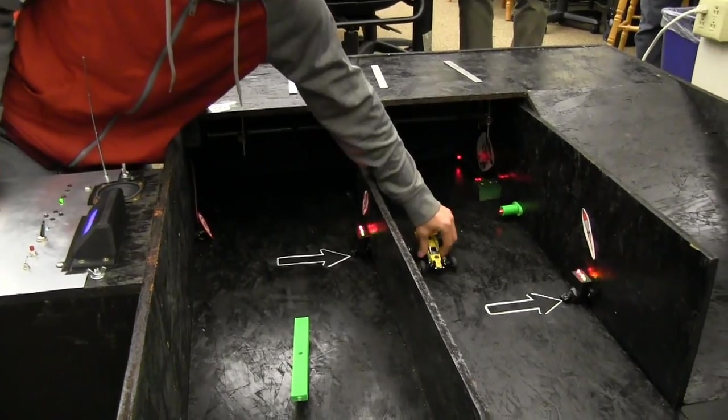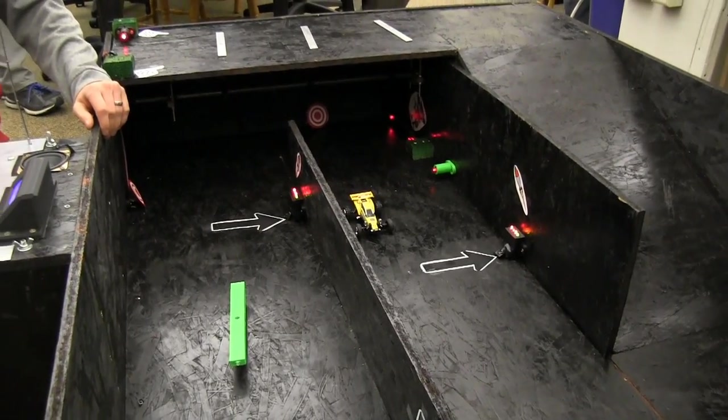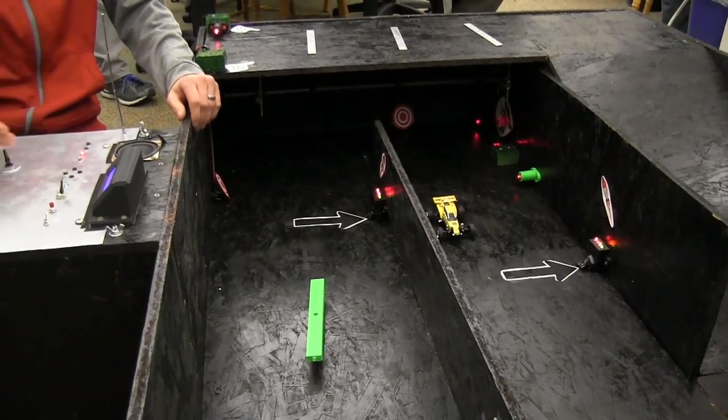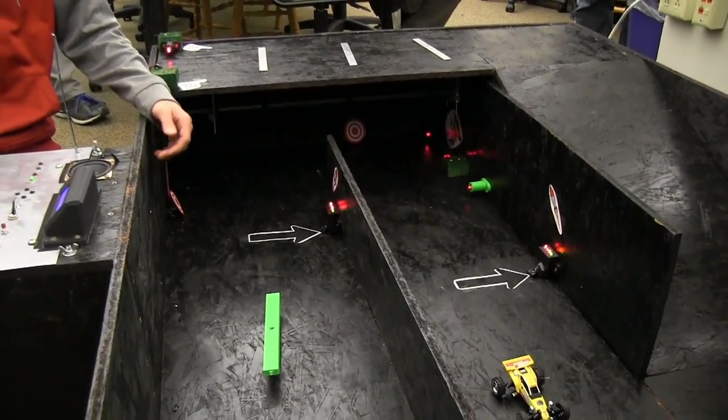When you cross this trip wire, it goes back and forth between red light and green light. When it's green, you can drive just fine. But when you hit red, you lose points.